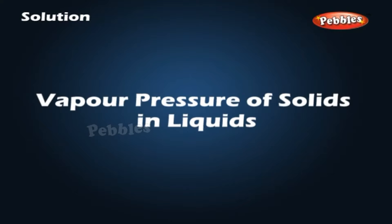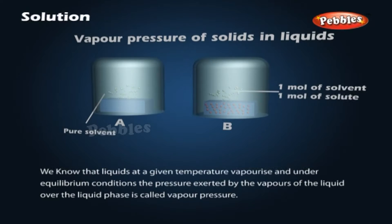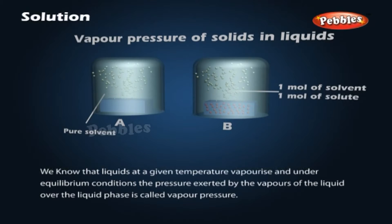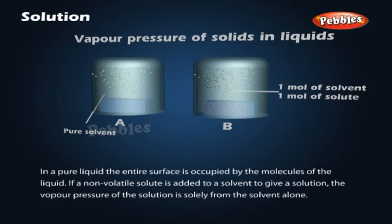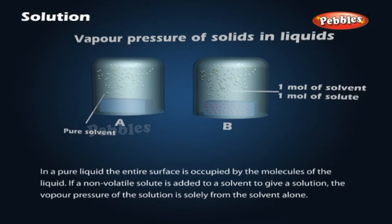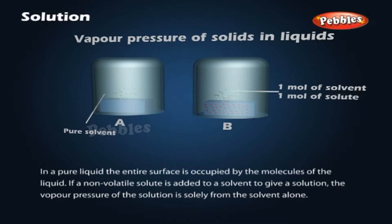Vapor pressure of solids in liquids: Liquids at a given temperature vaporize and under equilibrium conditions, the pressure exerted by the vapors of the liquid over the liquid phase is called vapor pressure. In a pure liquid, the entire surface is occupied by the molecules of the liquid. If a non-volatile solute is added to a solvent to give a solution, the vapor pressure of the solution comes solely from the solvent alone.